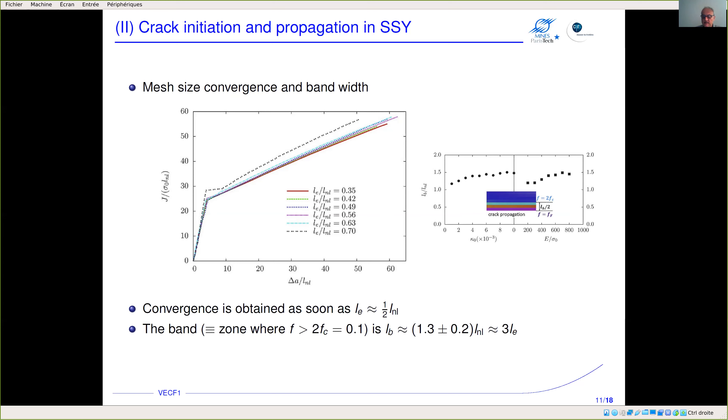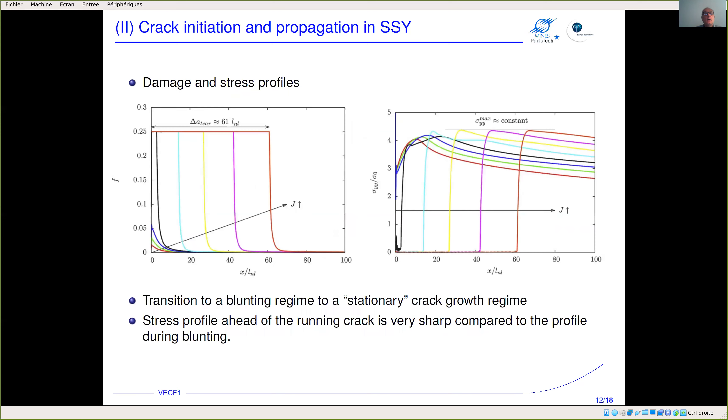We use this model to propagate cracks. Here you have an example of damage and stress profile. At the beginning you just have plasticity and crack blunting with a fairly smooth crack profile. This corresponds to the first two curves here for damage. At some point the crack will initiate and we have a transition from blunting regime to stationary crack growth regime.